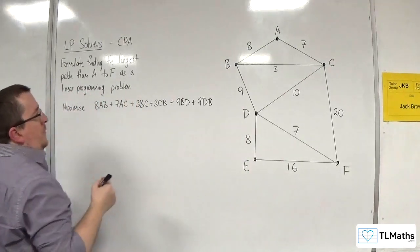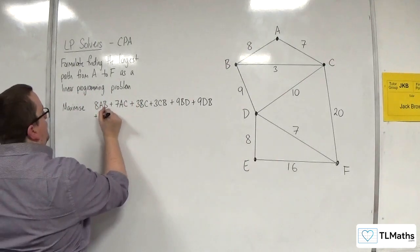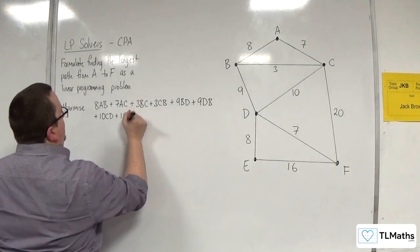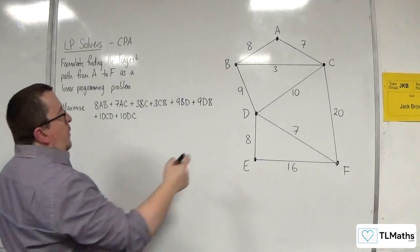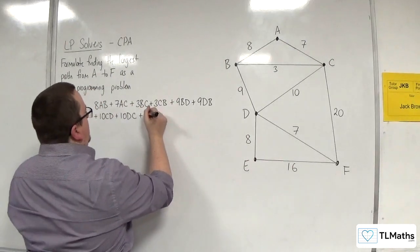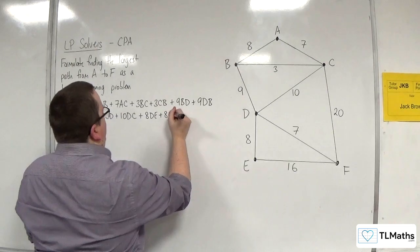We've got 10 lots of CD or 10 lots of DC. We've got 8 lots of DE or 8 lots of ED.